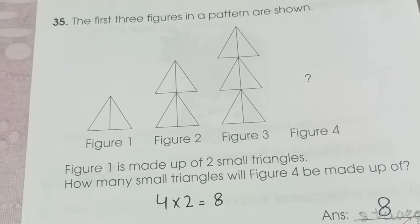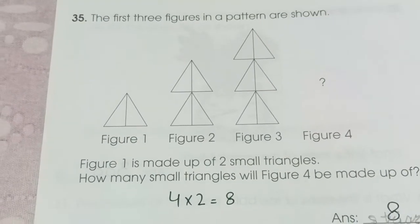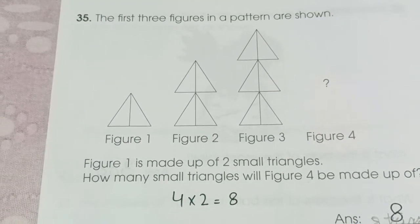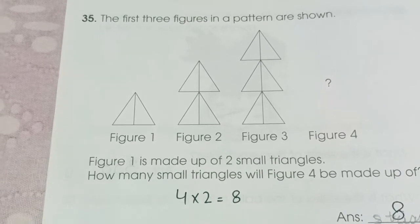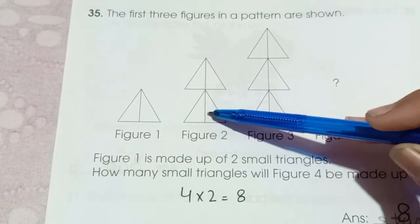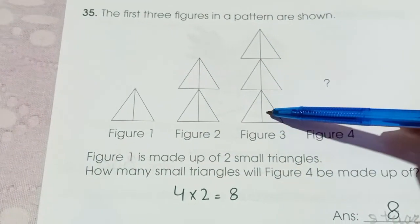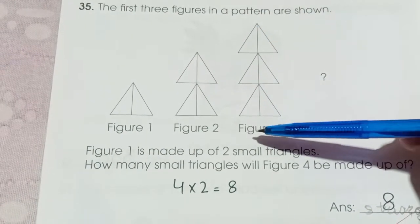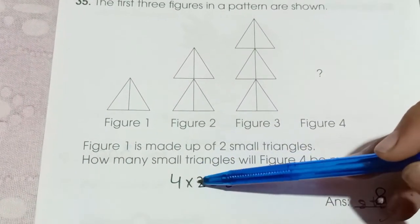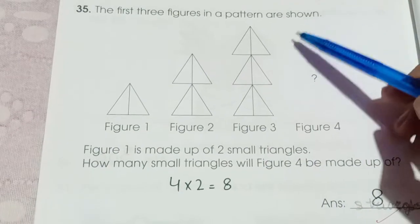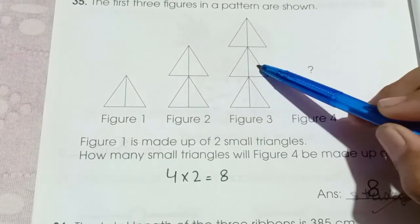Number 35: A pattern of figures is shown. Figure 1 is made of 2 small triangles, Figure 2 is made of 4, Figure 3 is made of 6. Following the pattern, Figure 4 is made of 8 triangles. We need to draw 8 small triangles.